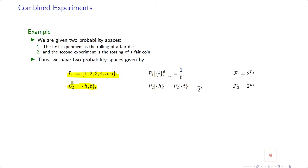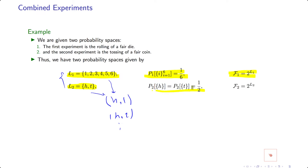If you do these two experiments together, your possible outcome has two components: one outcome of the dice, the other from the coin. So your outcome could be heads and one, or heads and two, and so on. How many possible outcomes do you have? Two times six — twelve possible cases. For the first probability space, assuming the dice is fair, you use this probability measure and define your sigma algebra as the power set of L1. For the second one, you can define the same thing, provided your coin is also fair.